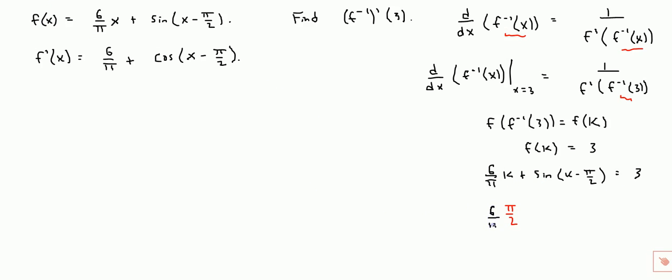Alright, we would have 6 over pi times pi over 2. And see, this actually works out perfectly, because we have sine of pi over 2 minus pi over 2. This is sine of 0, which is 0. So we'd have 3 plus 0, and that does equal 3. So what does that tell us? It tells us that f inverse of 3 equals pi over 2.